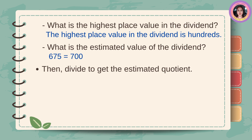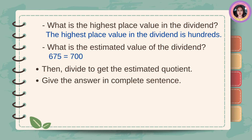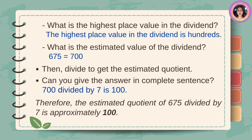Then, divide to get the estimated quotient. Give the answer in a complete sentence. Seven hundred divided by 7 is 100. Therefore, the estimated quotient of 675 divided by 7 is approximately 100.